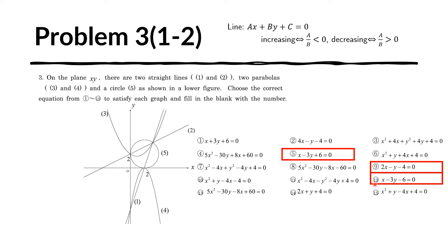Let's check the remaining choice. Putting zero for X and two for Y gives negative six minus six, which is negative twelve — not zero, so not a candidate for line 2. Trying (2, 0): two minus six is negative four — also not zero. Therefore this is not a candidate for line 1 or line 2. So finally, choice 5 will be our line 2, and the other will be our line 1.